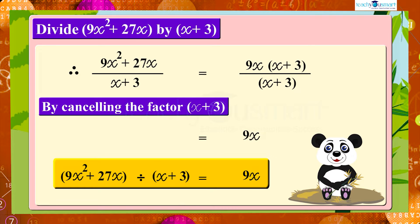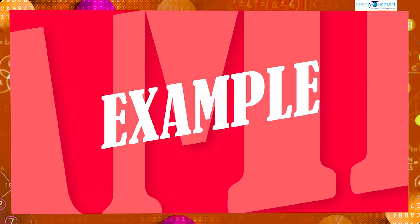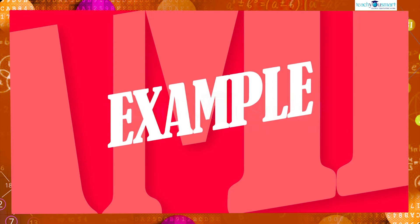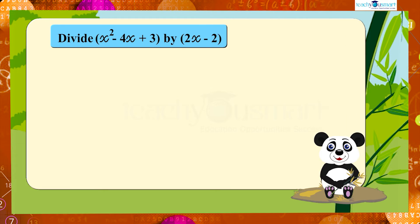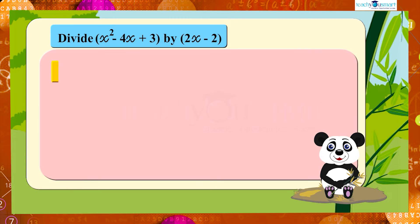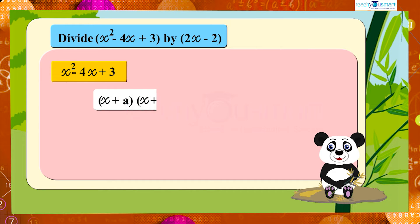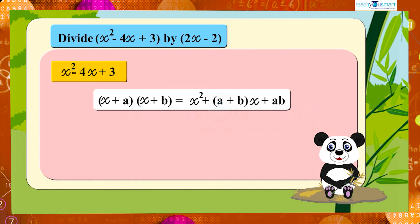Let's do another example. Divide x² − 4x + 3 by 2x − 2. First, we have to write these polynomials in factor form. For x² − 4x + 3, we use the identity (x + a)(x + b) = x² + (a + b)x + ab.